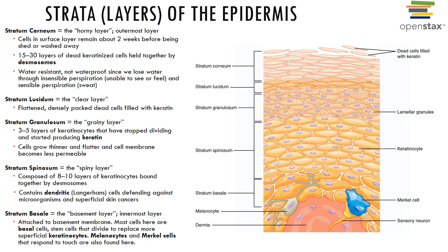The journey from the basal layer to the surface takes anywhere from 25 to 45 days. The stratum basale is very active mitotically — dividing keratinocytes migrate upward, fill with keratin, and die. Melanocytes are also numerous here; melanin is present and darkens the layer. Remember, melanin protects our cells from UV radiation.